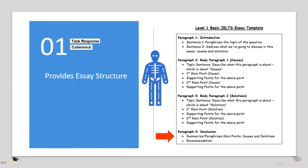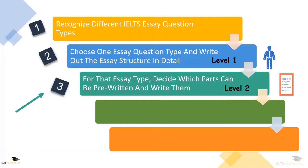This is a Level 1 basic essay template — the structure and organization is given to you. But if you want to improve your writing score even more, you need to create a good Level 2 and a great Level 3 essay template. So let's do that right now. At step three, for this particular essay type, decide which parts can be pre-written and write out good words, phrases, and sentences. To know which parts can be pre-written, we need to know which parts can be used over and over again for any IELTS essay question of this same type.